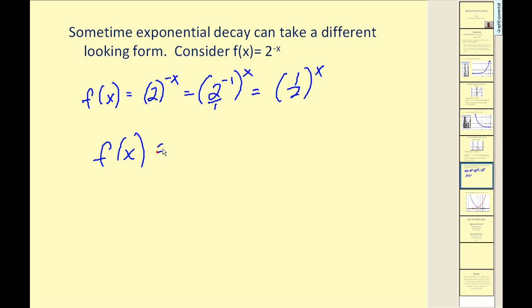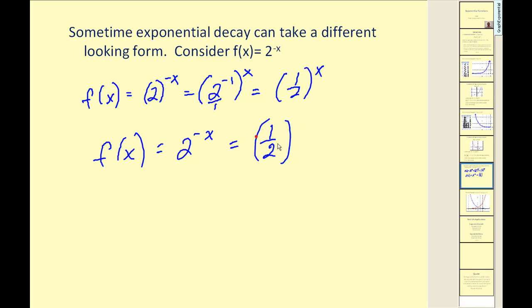We can rewrite two to the negative one as one-half, so f of x equal to two to the power of negative x is the same thing as taking one-half and raising it to the power of x.